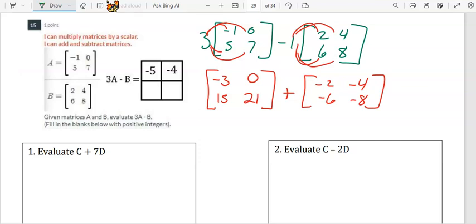From here, we'll add each element to the corresponding element of the other matrix. So we have negative 3 plus negative 2, 0 plus negative 4, 15 plus negative 6, and 21 plus negative 8.